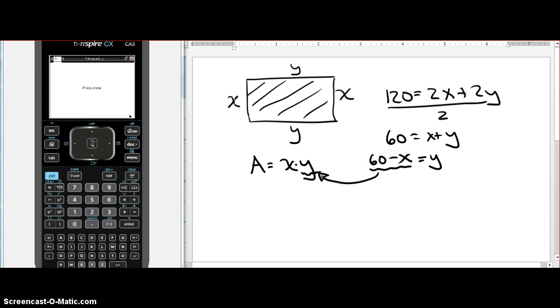And now my area equation is x times 60 minus x, or area is 60x minus x squared, or to make it look nice and pretty, negative x squared plus 60x is the equation of the area of my rectangle as a function of a single variable x.